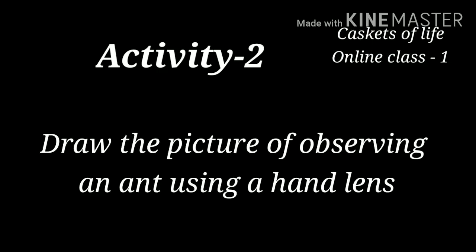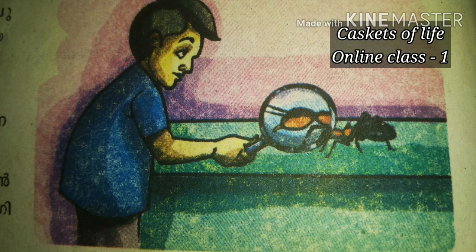Now we have to do our second activity based on this. That is Activity 2: Draw the picture of observing an ant using a hand lens. There is a picture given in your textbook on page number 8 — a picture of a boy observing an ant through the hand lens. Draw that picture and note the size difference observed using the hand lens.